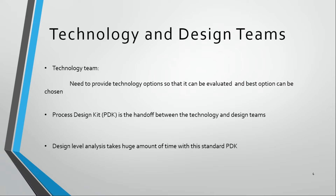Let's understand the relation between the technology and design teams, because what we are trying to understand is design and technology co-optimization. The process technology team needs to provide options so that they can be evaluated and the best option can be chosen for a particular type of design. The process technology team provides the design team something called a PDK, or process design kit.